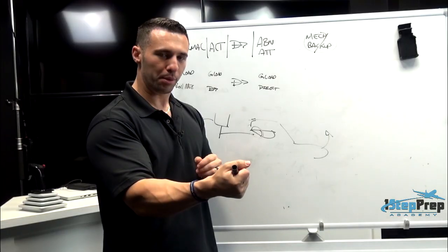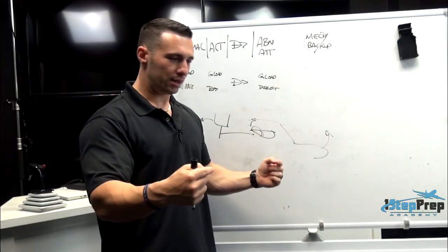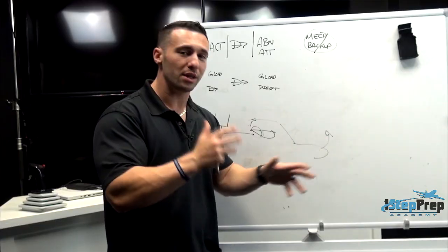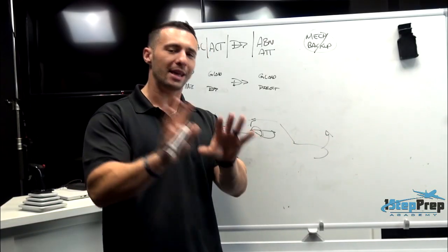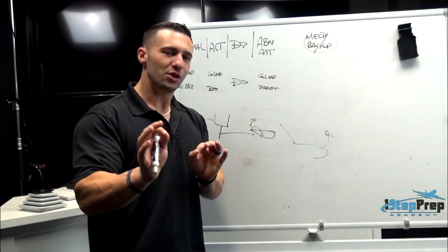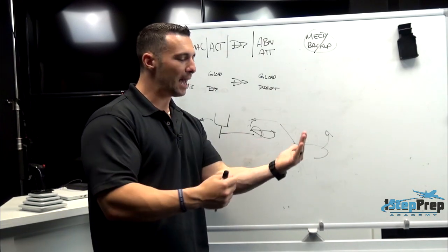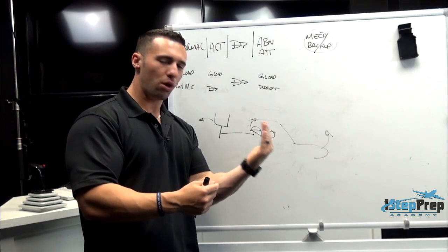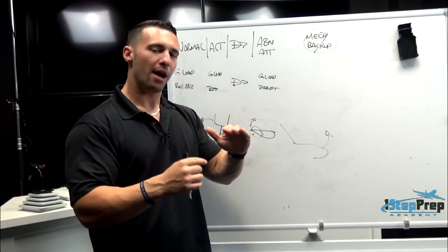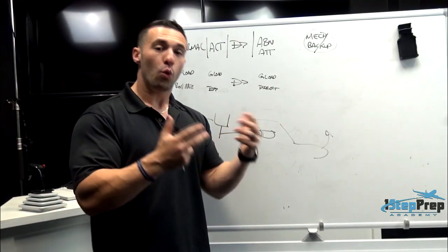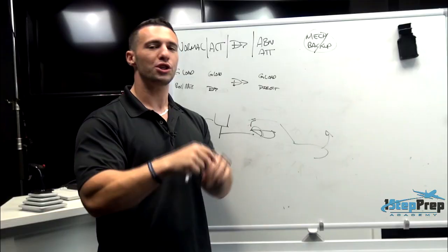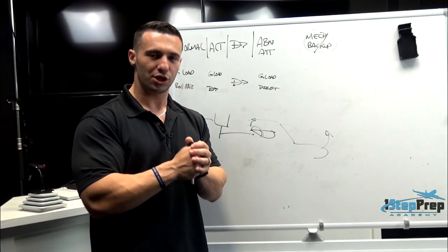A left or right aileron input directly drives — even if it's hydraulically actuated — the point is that a 10% aft control column deflection gives you a 10% elevator deflection. A 20% aileron deflection gives you a proportionate 20% aileron deflection as well.